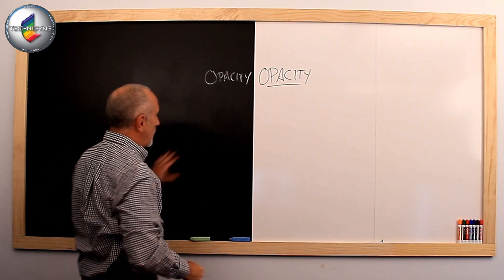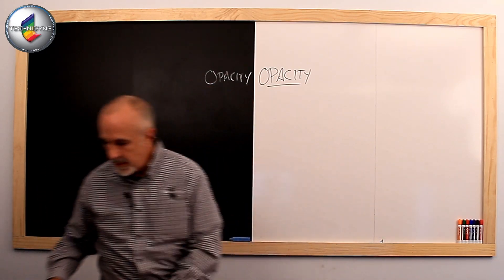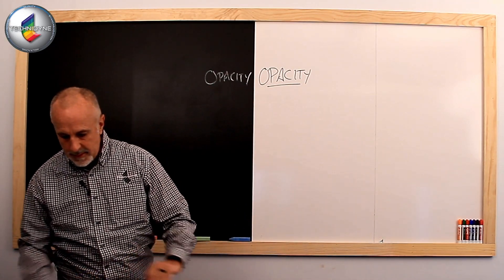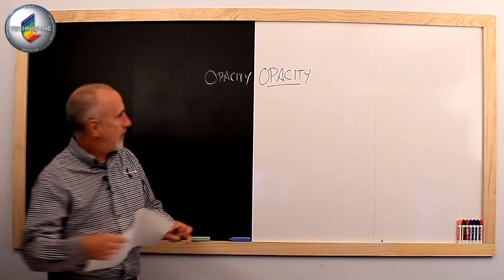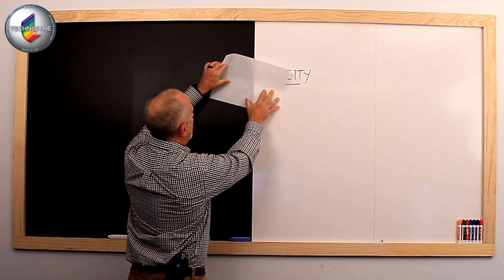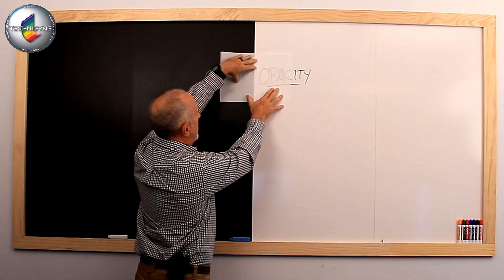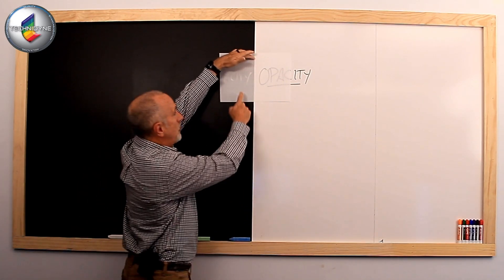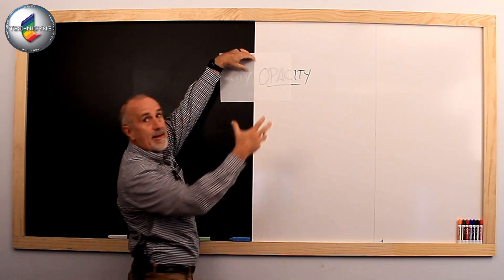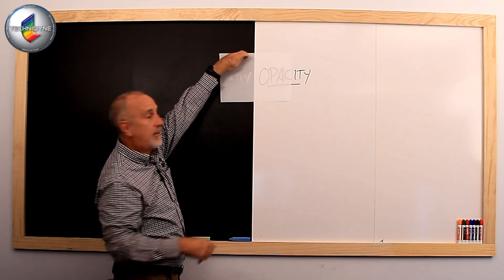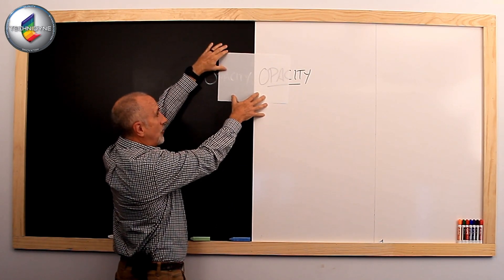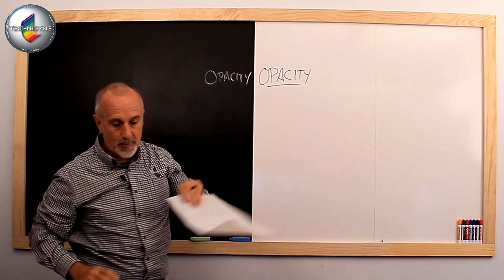All right, so we've got those two words there, opacity on both sides. Now, let's put this sheet up there. All right, what do you see? Do you see a difference between the two sides? And do you still see some of the word opacity passing through the sheet? My guess is you do, because this sheet is not 100% opaque.